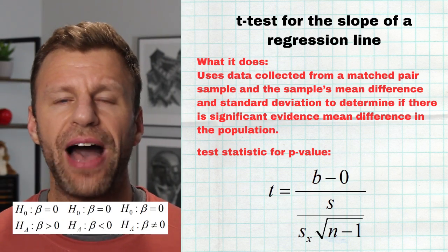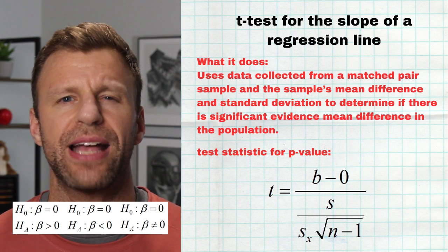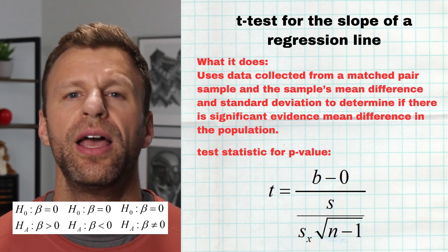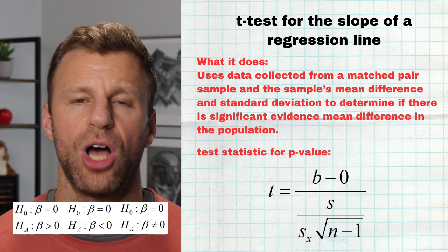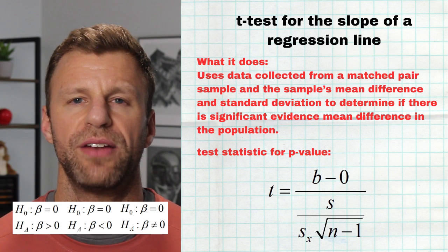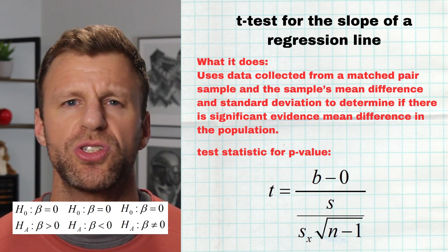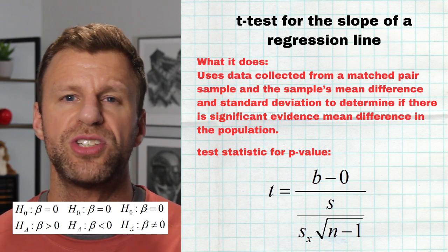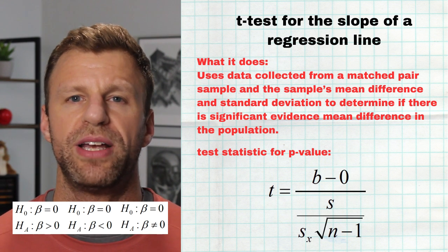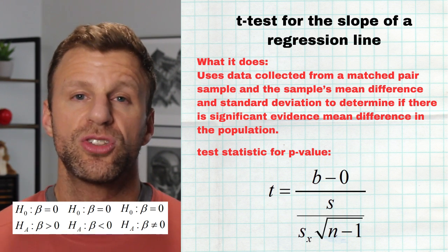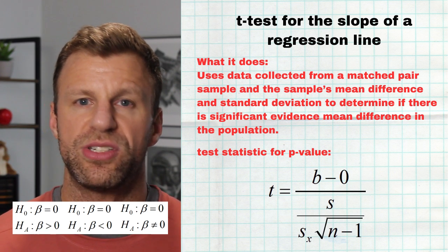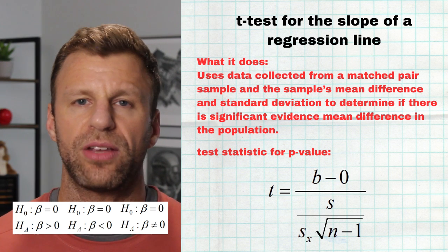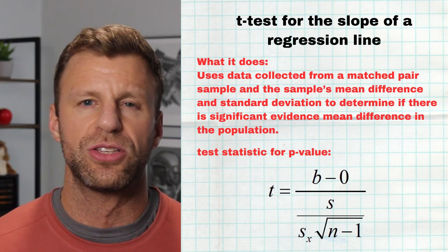The ninth and final test is probably the most rare on the AP stats exam, but it does come up every now and then: a test for the slope of a regression line. The null hypothesis is that the true slope between two quantitative variables is zero — there's no relationship whatsoever. The alternative is that there is a slope, whether positive (greater than zero) or negative (less than zero), meaning we truly believe there is a relationship between these two variables. We start with a sample slope from a sample of data, calculate its t-score, and then calculate the p-value. Overall, it's a very similar process.